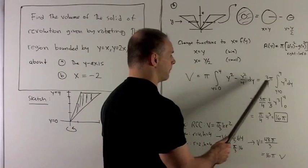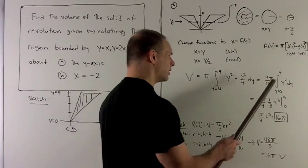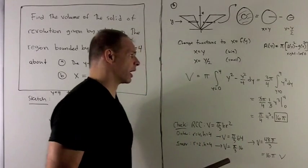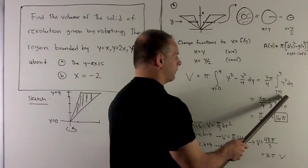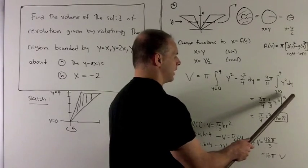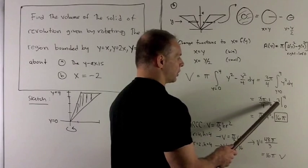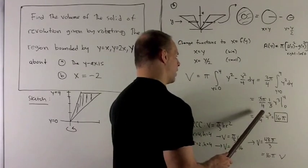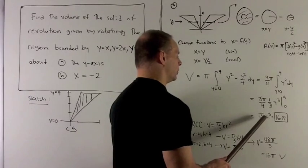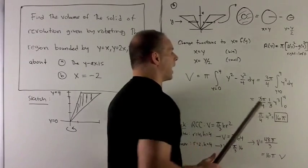Then we're just taking the antiderivative of y squared. So that's going to be 1 third y cubed. Evaluate at 4, evaluate at 0, take the difference. But you notice putting 0 in does nothing. So we're looking at pi over 4 times 4 cubed or 16 pi.